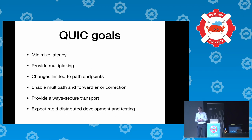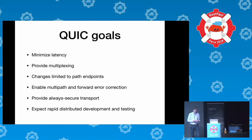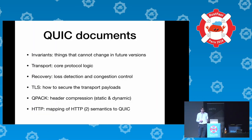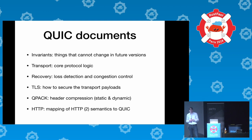They want to rapidly do development and testing, so it will not just be this version of QUIC and then coast along for a long while. They expect there will be revisions of QUIC, so there's stuff like version negotiation built-in, which makes it possible to move the ecosystem forward without having large flag days.